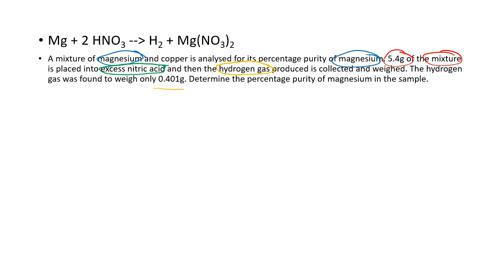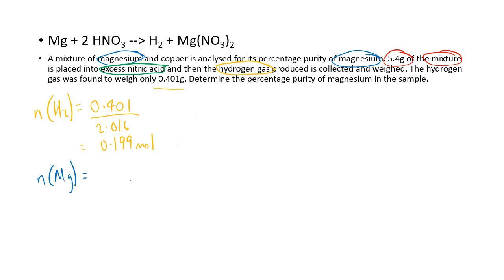We start with the product: the number of moles of H₂ = 0.401 ÷ 2.016 = 0.199 moles. Now from the number of moles of H₂, we work out the moles of magnesium within the mixture, multiplying by the coefficient ratio of 1/1. Save that value as A.